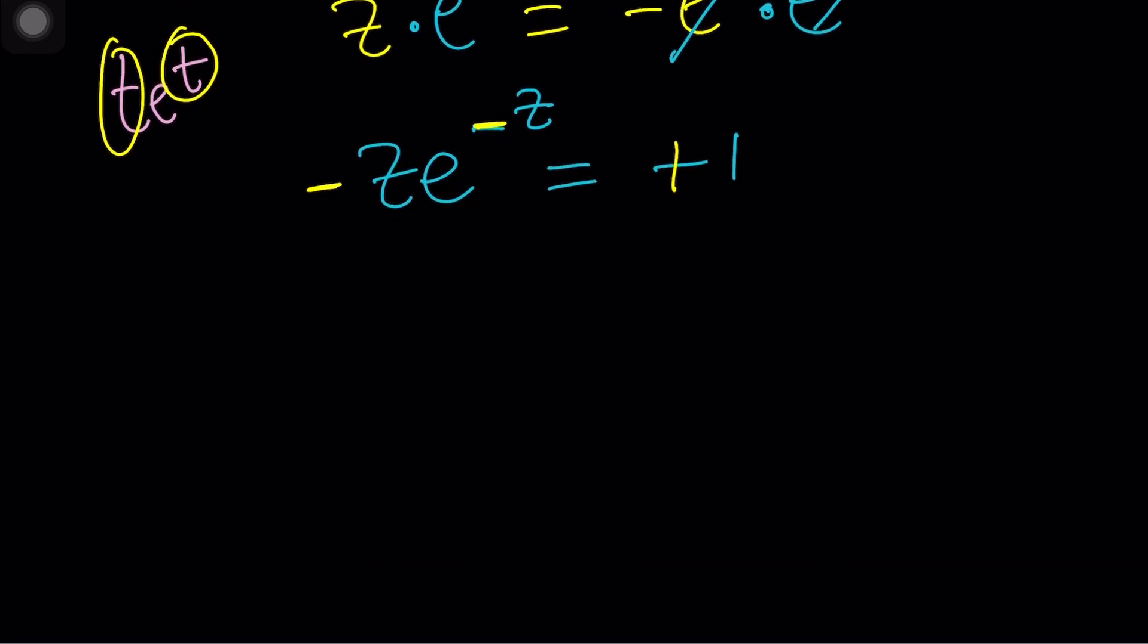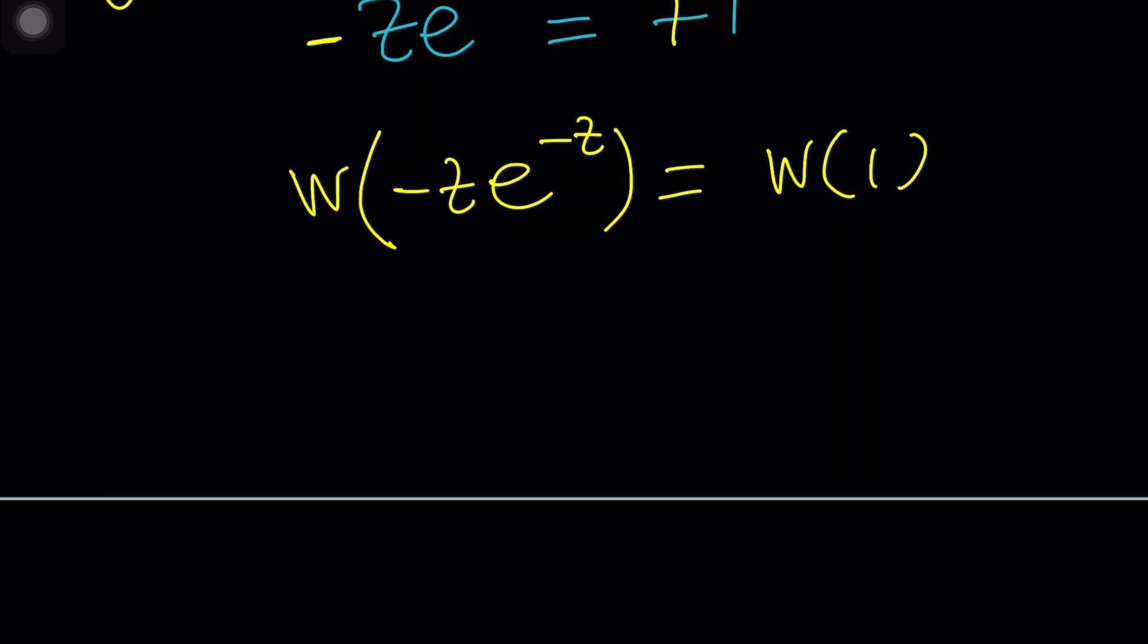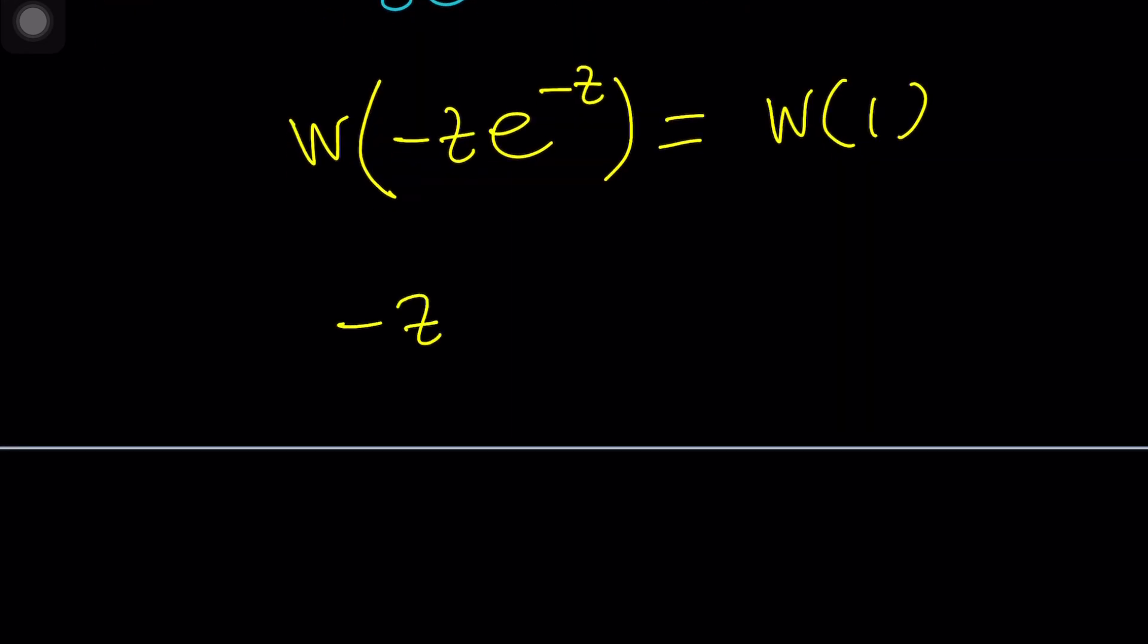And now we are ready to Lambert, I mean W, both sides. And then this will give us something like this. And then when I apply W, it should give me negative Z equals W of 1. And from here, Z should be negative W of 1.